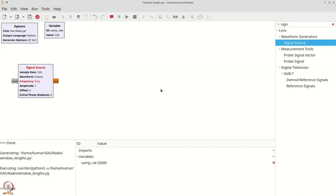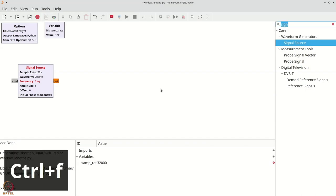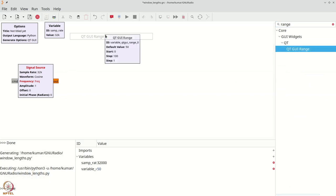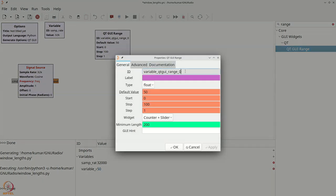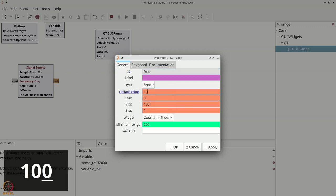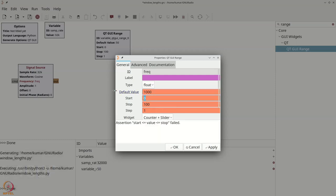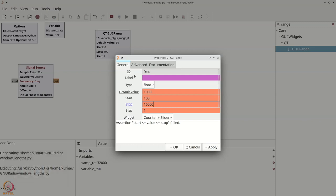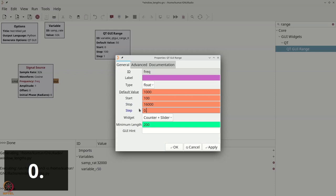We will then add a QTGUI range first. So control F or command F, type range, grab the range, place it onto our screen. The ID will be FREQ, float is the type. We want the default value to be 1000 Hz. We will start exactly at 100 Hz. And we can stop at around 16000 Hz. That corresponds precisely to half the sampling rate. In fact, we would want to stop a little before, but it's fine. We will make the step size 0.1 Hz.